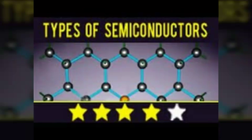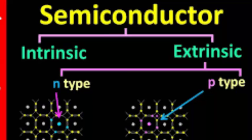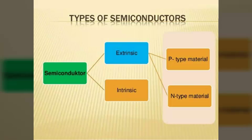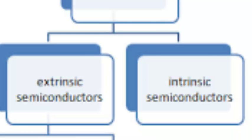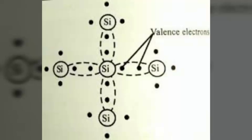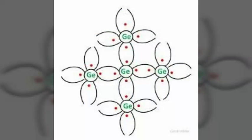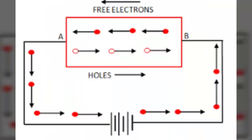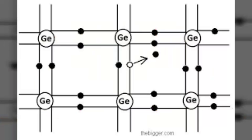Let's start today's topic with types of semiconductor. We know there are two types of semiconductor: intrinsic and extrinsic. Now let's discuss intrinsic semiconductor. A semiconductor in an extremely pure form is known as an intrinsic semiconductor. When an electric field is applied across an intrinsic semiconductor, current conduction takes place by two processes, namely by free electrons and holes.